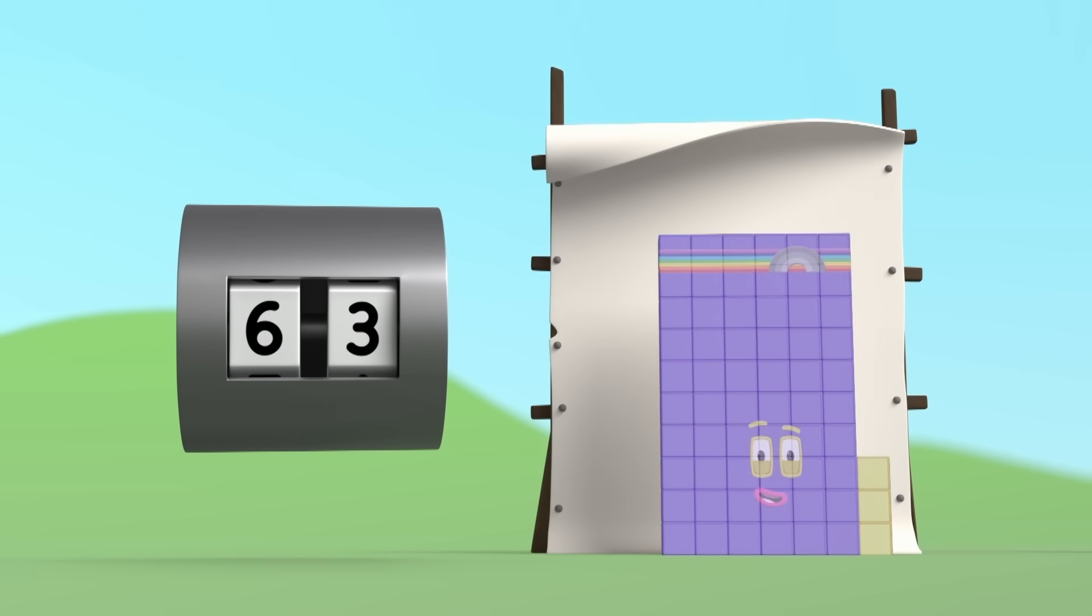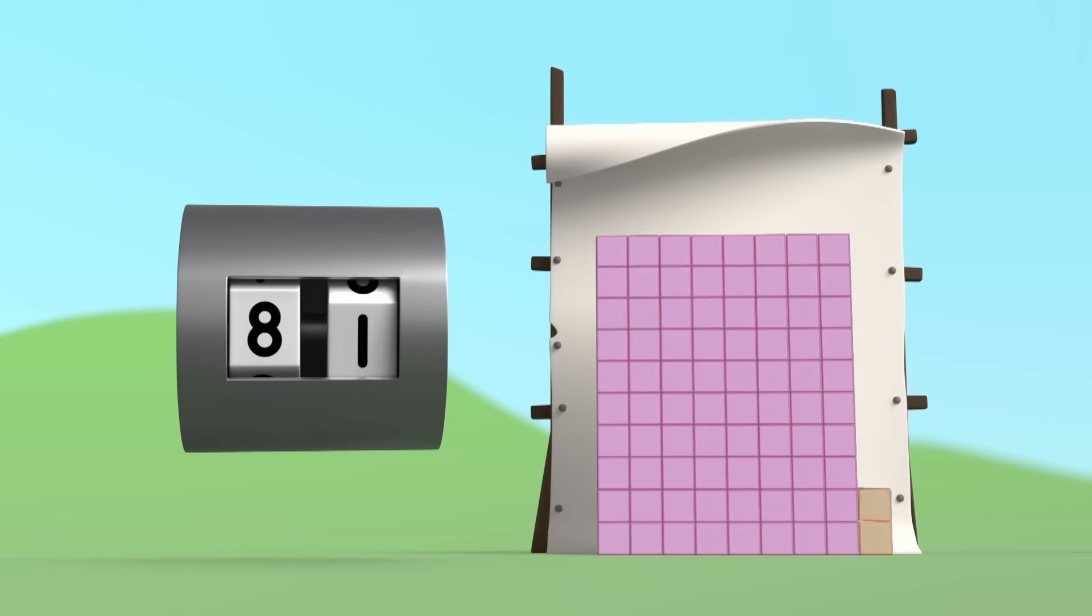7 times 9 is 63, add 10, take 1 away, 8 times 9 is 72, add 10, take 1 away.